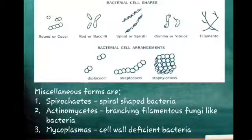There are also miscellaneous forms present. They are spirochetes, which are spiral shaped bacteria, and actinomycetes which are branching filamentous, fungi-like bacteria. Mycoplasmas are bacteria which lack the cell wall.